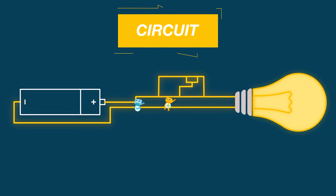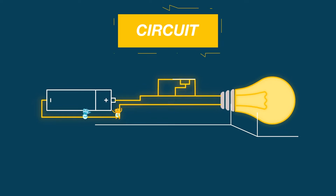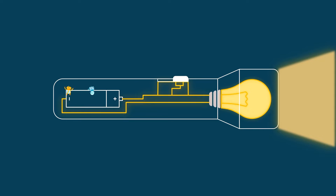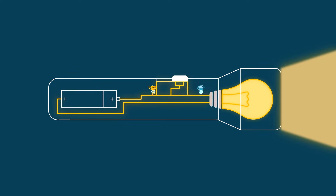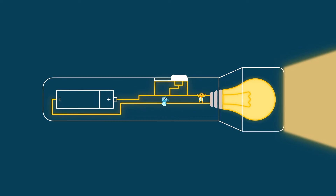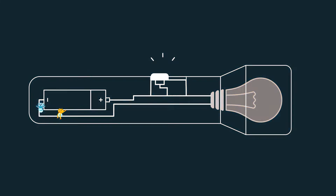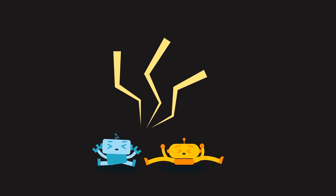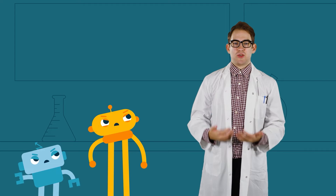That electric current is what we call electricity. For an electric current to start flowing, there must be a path for it to follow called a circuit. A circuit is a continuous loop of electric current flowing around and around — like in a flashlight. With the switch on, electricity flows around the circuit. If there is a break in the circuit, like by turning off a light switch, electricity cannot flow and the lamp will not light.